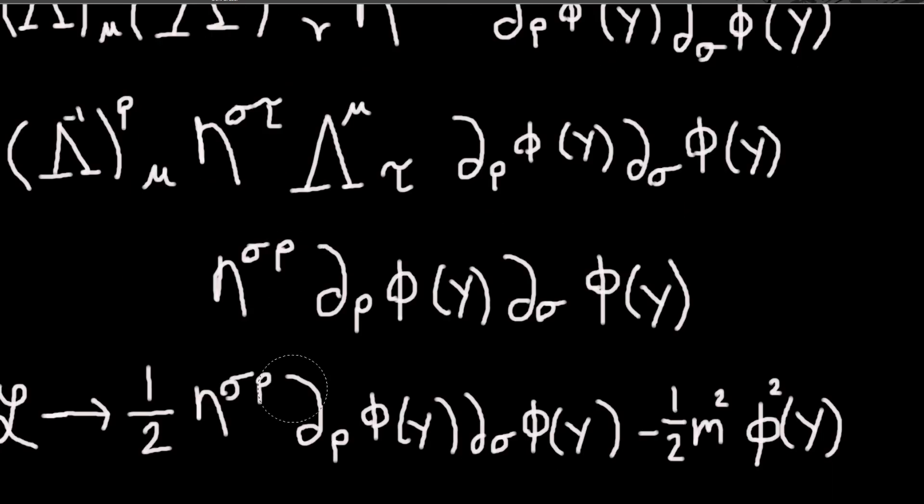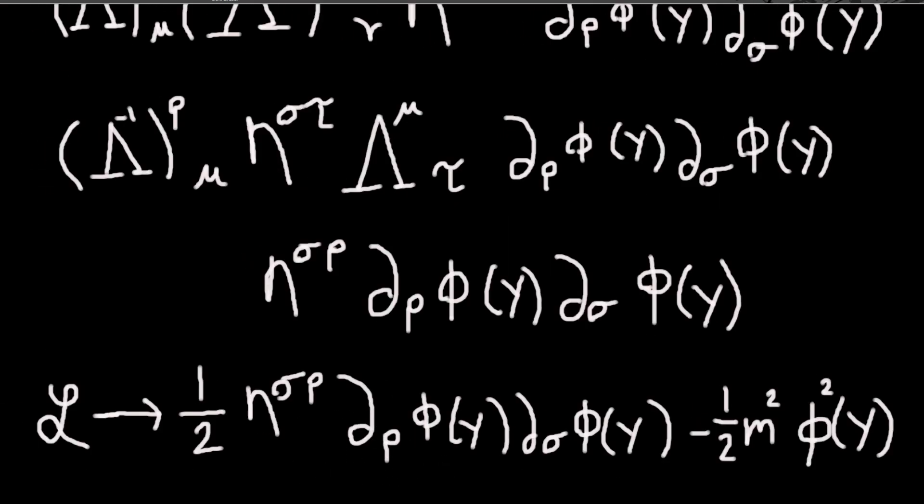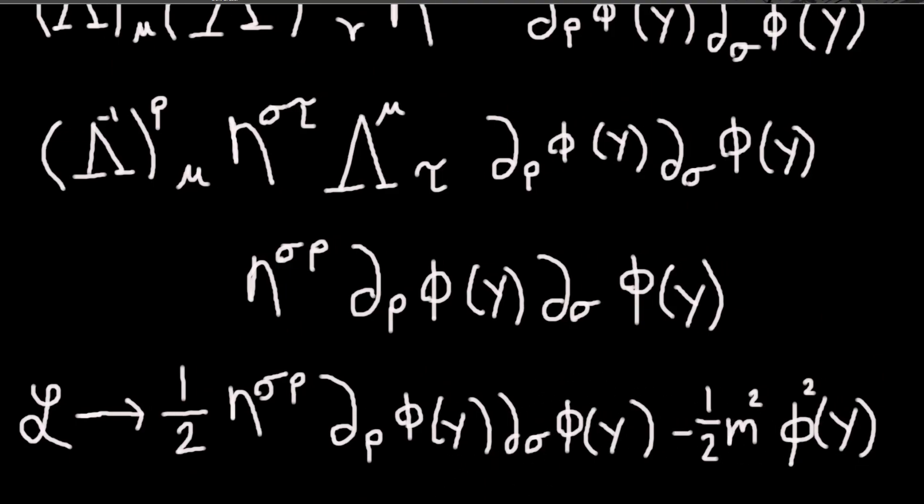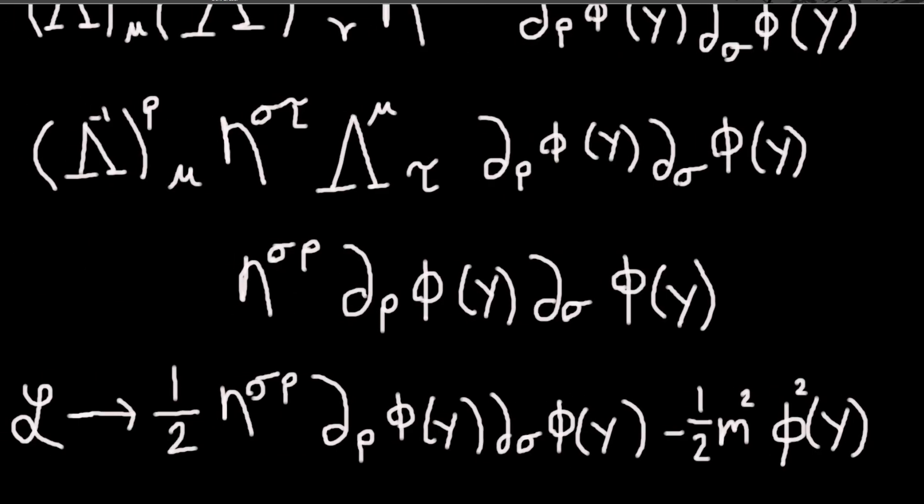And so our total Lagrangian, we can see it will transform as it will become this. And so it has the same form as before, only evaluated at y instead of x.